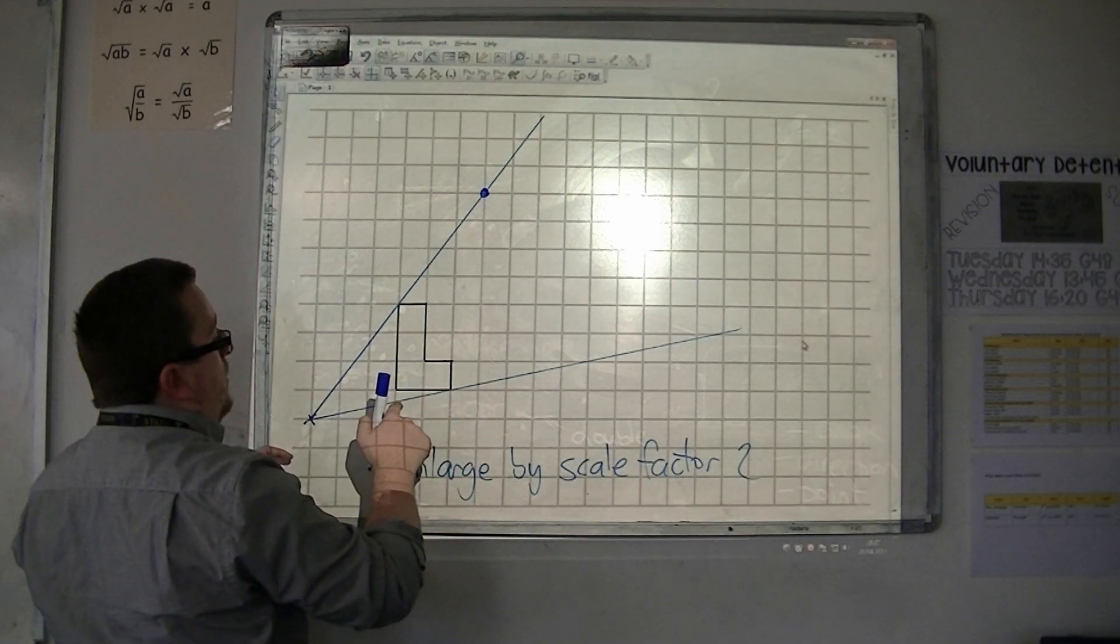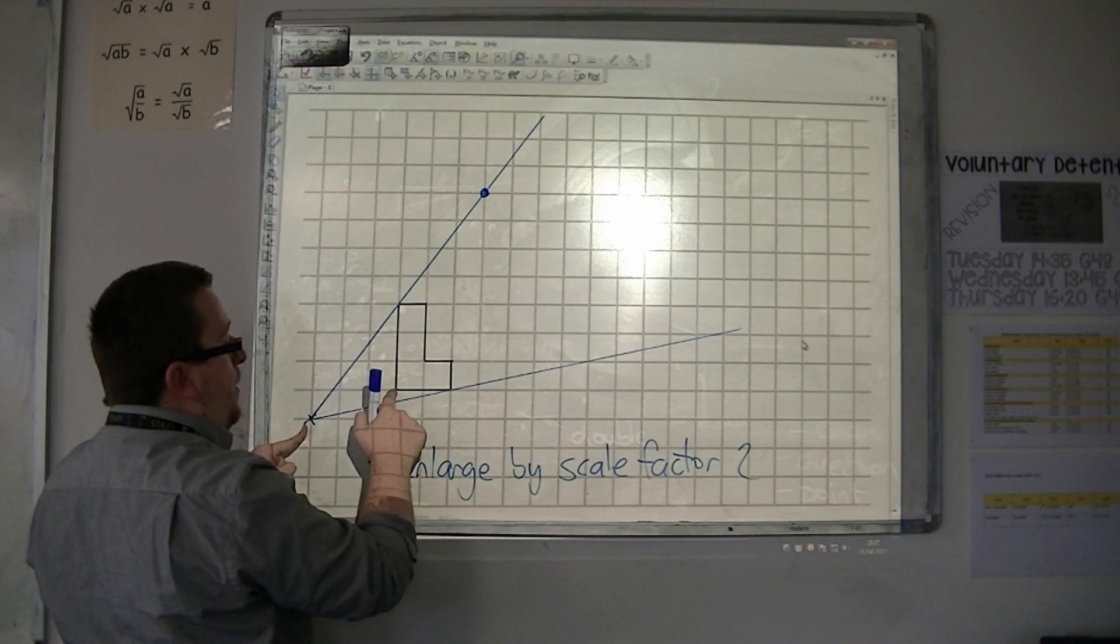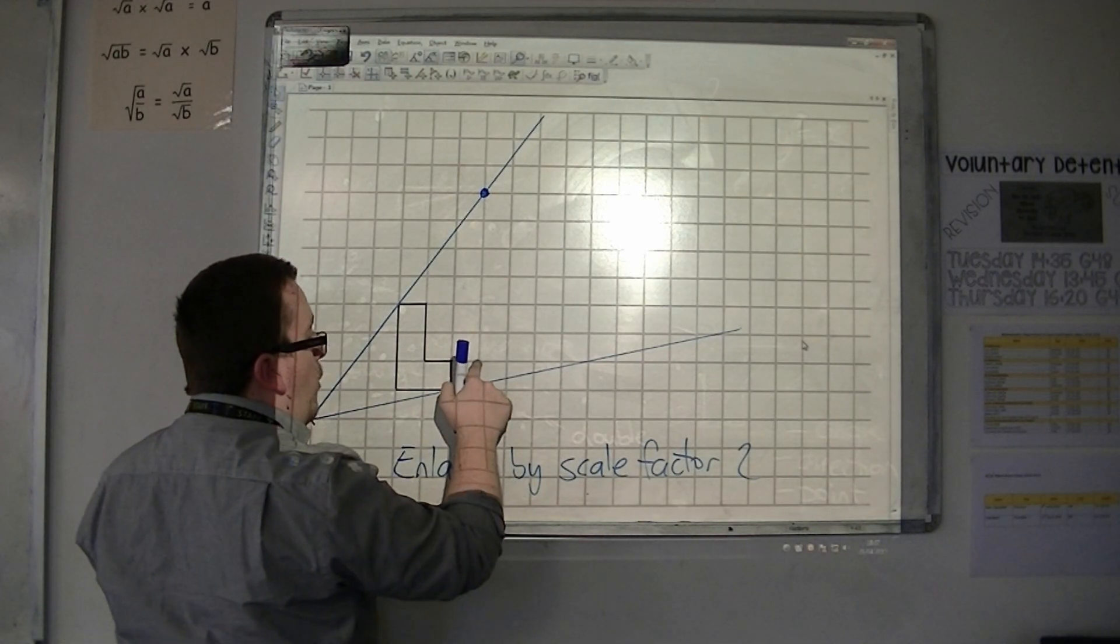If I'm looking for this point, then I go three along and one up. So I need to double that. So I go three along and one up.